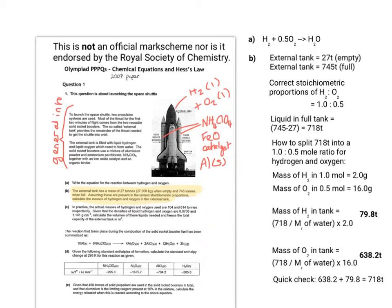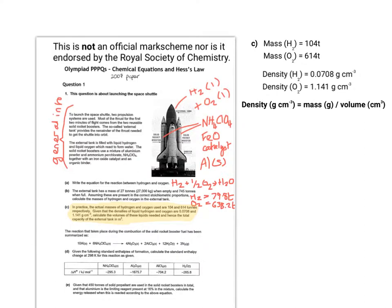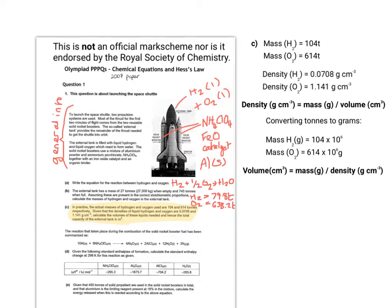Clearing the screen on the right-hand side, we can look at the next part. In practice, the actual masses of hydrogen and oxygen are 104 and 614 tonnes respectively. It also gives their densities. The formula for density is mass over volume. If we take the mass as grams and volume as centimetres cubed, we need to bear in mind there are a million grams in a tonne. We need to convert the tonnages into grams for hydrogen and oxygen respectively.